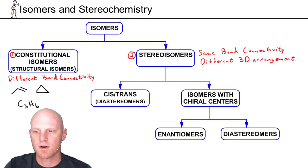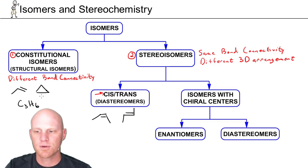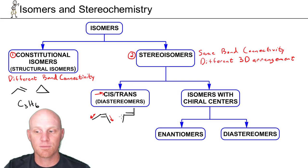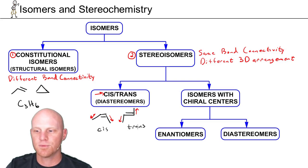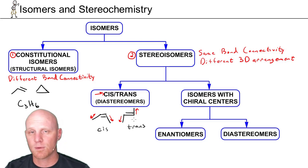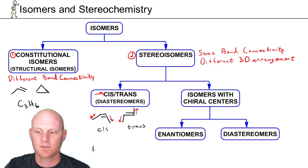You've seen stereoisomers before, most commonly in cis-trans isomers — in both alkenes as well as cycloalkanes. In an alkene, we have cis-2-butene and trans-2-butene. Your carbon-carbon double bond is not free to rotate, so the three-dimensional arrangement of the atoms can be different. Are these two methyl groups pointing 60 degrees apart or 180 degrees apart? Cis-2-butene and trans-2-butene have the same bond connectivity — a four-carbon chain with a pi bond between carbons two and three in both cases — but the three-dimensional arrangement of the atoms is different.